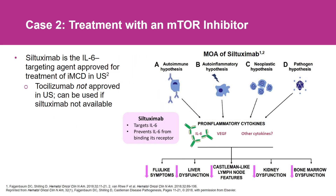In iMCD, a number of potential triggers can lead to this cytokine storm, and typically interleukin-6 is the key driver. Patients experience systemic inflammation, organ dysfunction, and cytopenias due to excess cytokine levels including IL-6. So we always start by blocking interleukin-6 with a targeted antibody called siltuximab — that's first-line therapy, and it works very well in about one-third to one-half of patients.